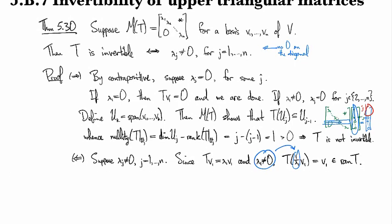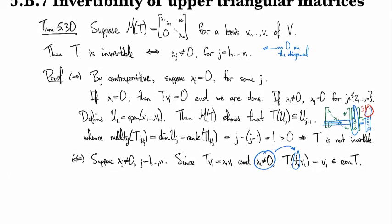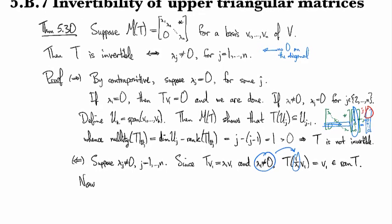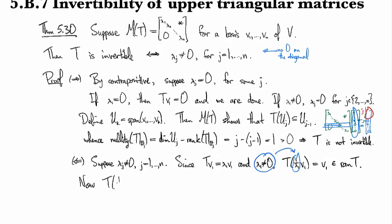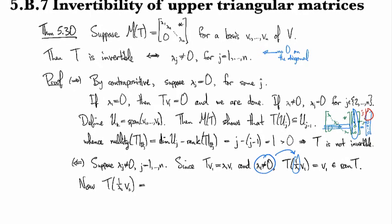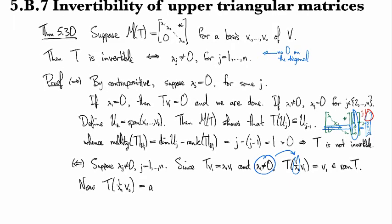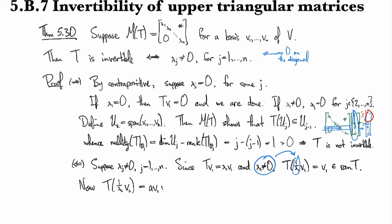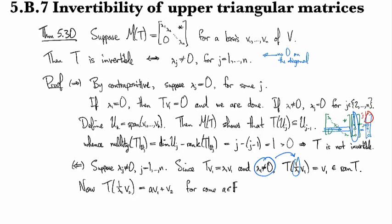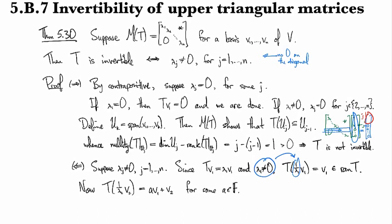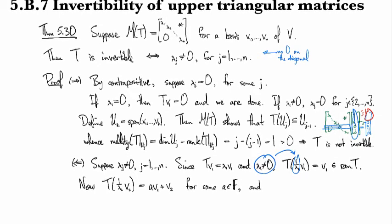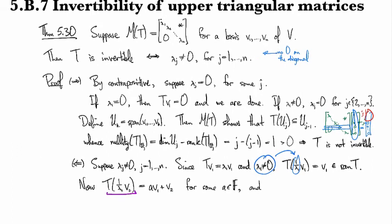Now we'll show that all the rest of the basis vectors are in the range of T as well, and that'll get us surjectivity. For the next one, if we look at T(1/lambda_2 · v_2), this is in the span of v_1 and v_2, so it's going to look like a·v_1 + v_2 for some scalar a. This expression is in the range of T.